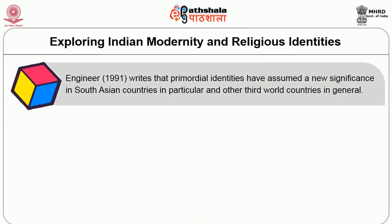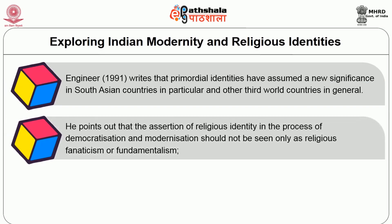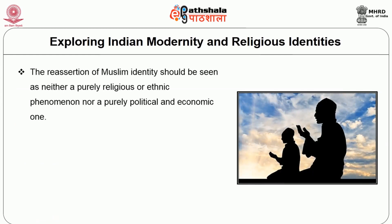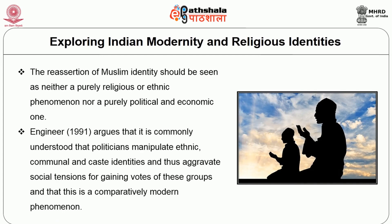Inginia in 1991 writes that primordial identities have assumed a new significance in South Asian countries in particular and other third world countries in general. He points out that the assertion of religious identity in the process of democratization and modernization should not be seen only as religious fanaticism or fundamentalism; it should also be seen as a method by which deprived communities in backward societies seek to obtain a greater share of power, government jobs, and economic resources. Engineer argues that politicians manipulate ethnic, communal, and caste identities to aggravate social tensions for gaining votes, and that this is a comparatively modern phenomenon.